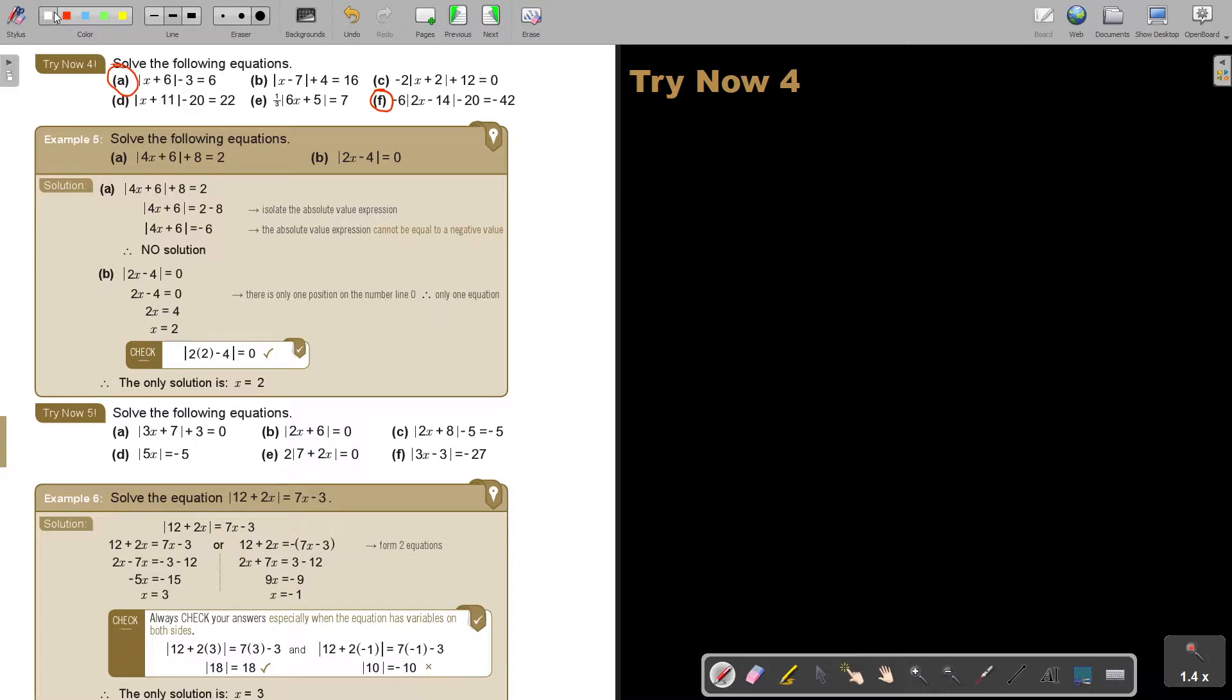Let's start. Number A. It's going to be |x + 6| - 3 = 6. So, x plus 6. Now, just take it over. You can directly go to 9, not necessary to write that first step down.